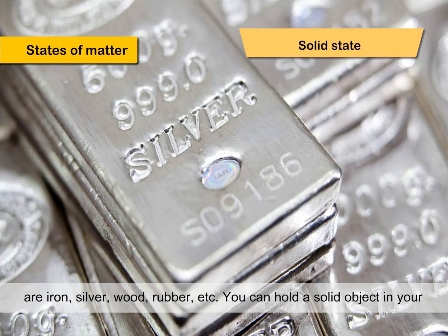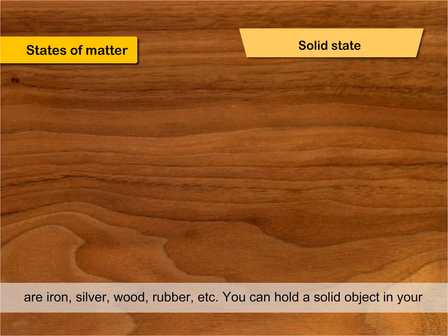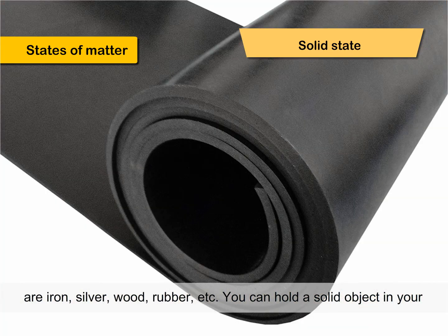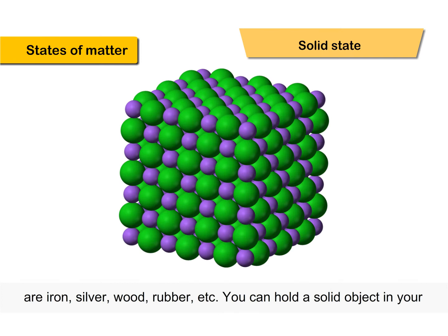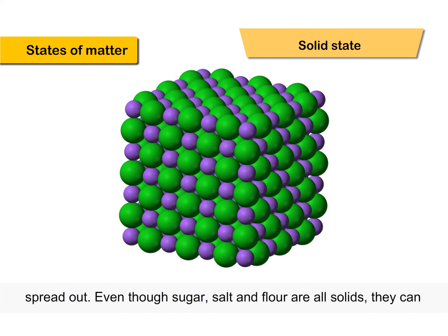Some common examples of solids are iron, silver, wood, rubber, etc. You can hold a solid object in your hand. Solids always take up the same amount of space. They do not spread out.